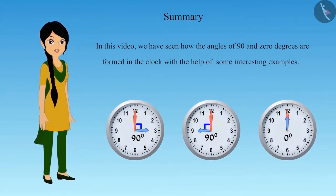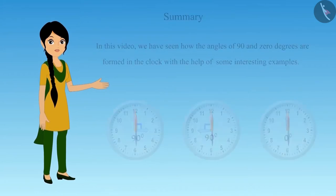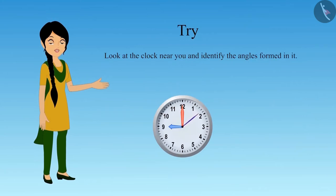In this video we have seen how the angles of 90 and zero degrees are formed in the clock with the help of some interesting examples. Do you have a clock near you? Can you tell me which all angles are being formed in it?